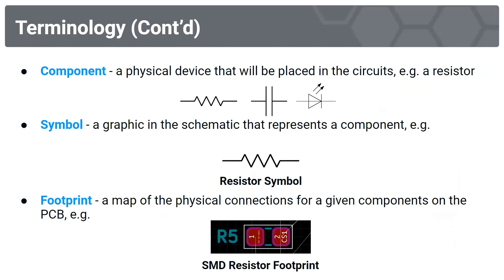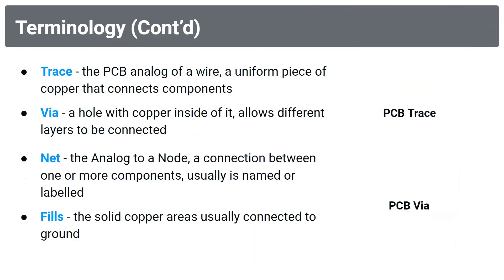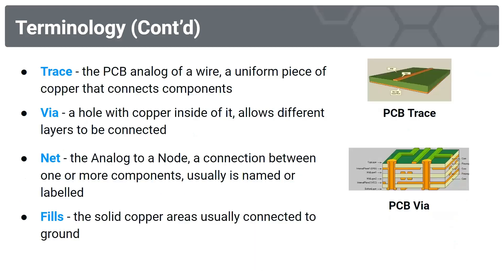More terminology. A component is just a physical device that will be placed in a circuit, for example a resistor. A symbol is a graphic in the schematic that represents a component. A footprint is a map of the physical connections for a given component on the PCB. Traces are the PCB analog of a wire — a uniform piece of copper that connects the components.